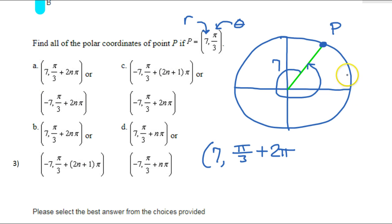So this would be another name for the same thing. Positive 7, and then I went pi over 3 plus 2 pi puts me at the same spot. Now, of course, instead of going around 1 extra time, I could go around 2 extra times. Or I could go around 3 extra times. So what I'm going to add on here is the letter N to represent how many times I'm going around.